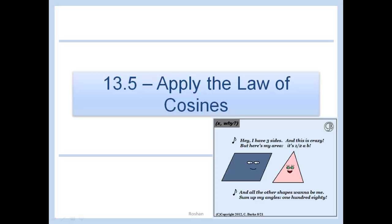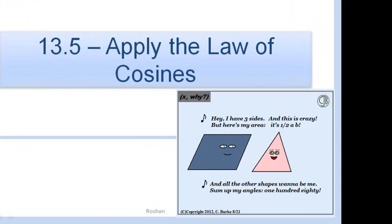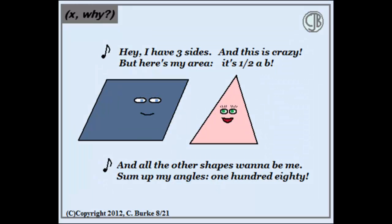Apply the law of cosines. I have three sides, and this is crazy, but here's my area. It's one half AB, and all the other shapes wanna be me. Sum up my angles, 180.